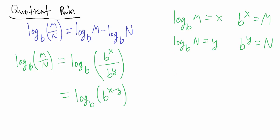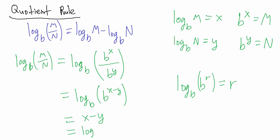Just like in the previous video, we use the property that the base B log of B^R equals R — if you take the base B log of B to a power, you just get that power back. So the base B log of B^(X minus Y) is just X minus Y. And since X = log_B(M) and Y = log_B(N), this whole expression becomes log_B(M) minus log_B(N), which is exactly what we wanted to prove. We've established the quotient rule using the exponent property B^X divided by B^Y equals B^(X minus Y).